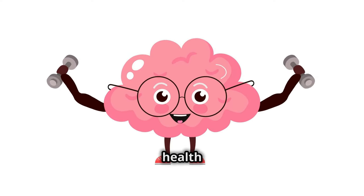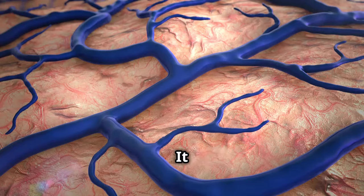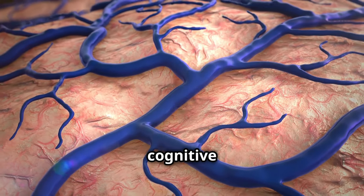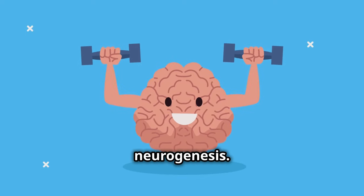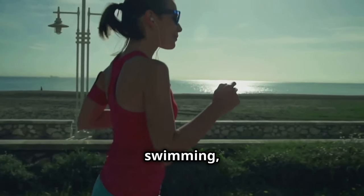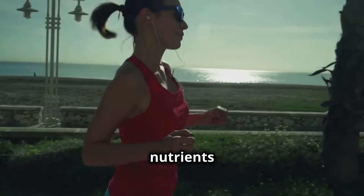Exercise boosts brain health and promotes neurogenesis. It increases blood flow, supports neuron growth, and enhances cognitive function. Aerobic exercise has a profound impact on neurogenesis. Activities like running, swimming, and cycling deliver oxygen and nutrients to the brain.